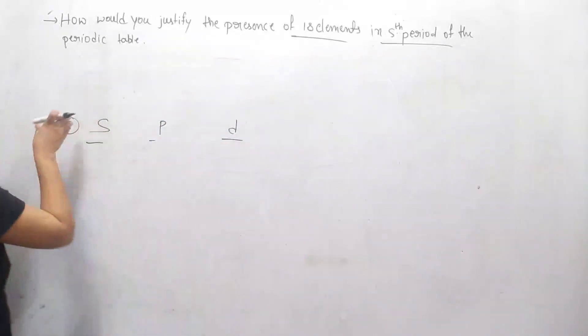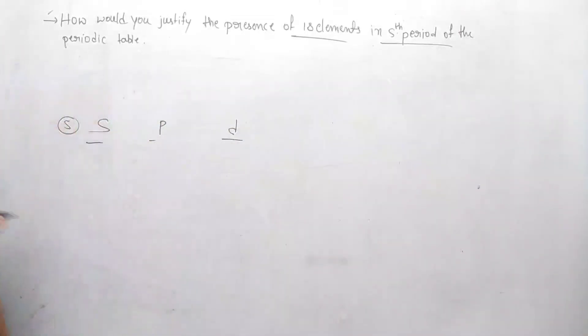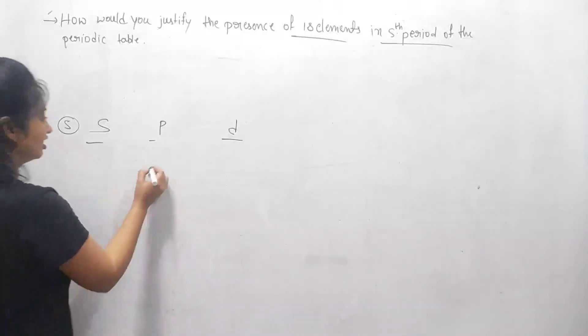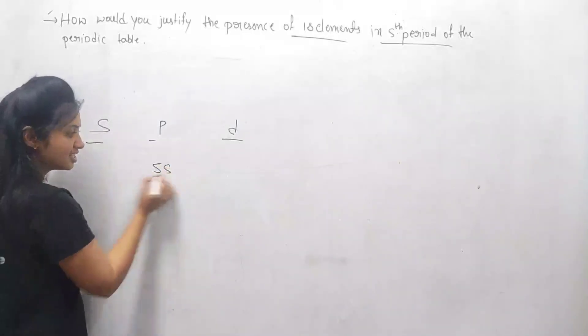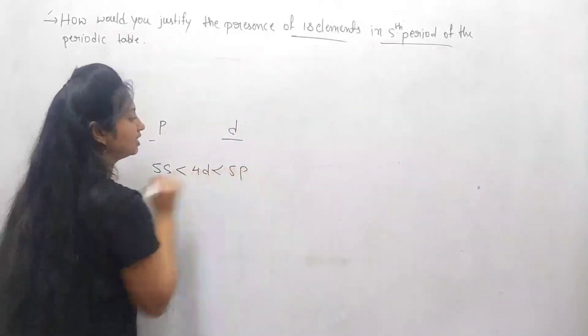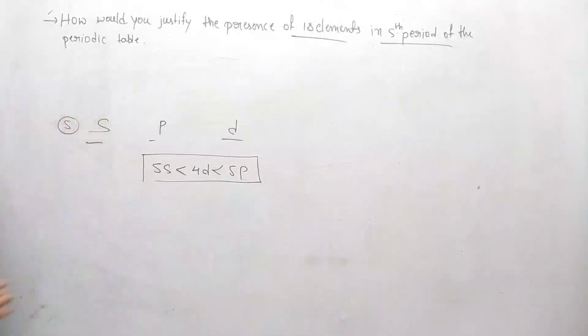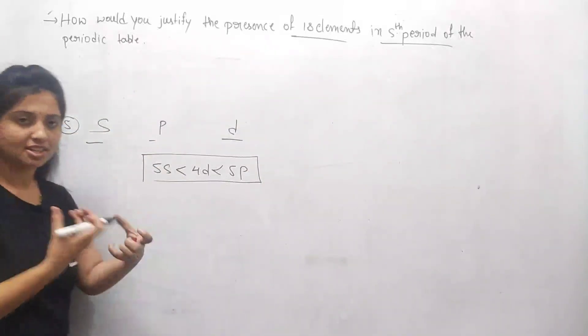So the fifth period involves or includes s block, p block, and d block. Here the orbitals being filled are 5s, 4d, and 5p. So like this we have the electronic configuration or all orbitals being filled in the fifth period.